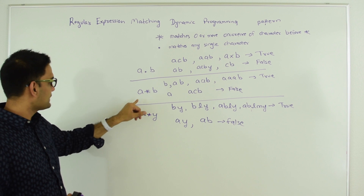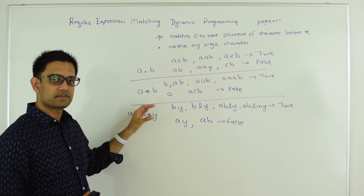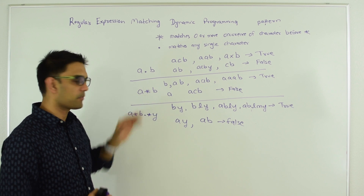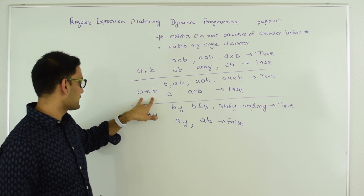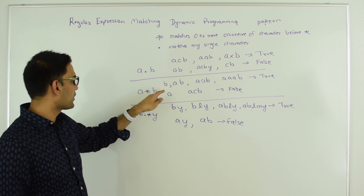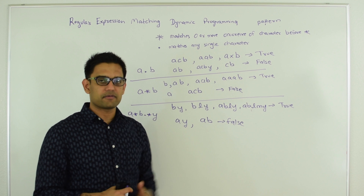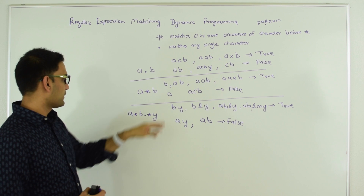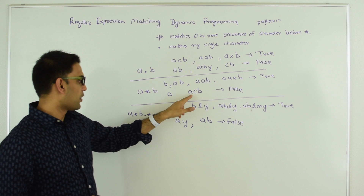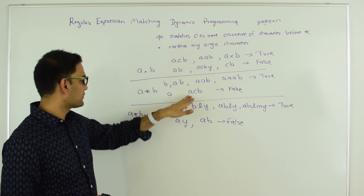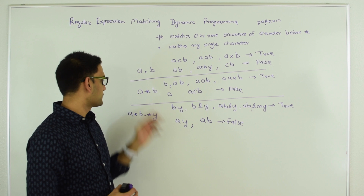Another example: A star B. Here we can have zero or more occurrences of A followed by B. So if my text is B and pattern is A star B, that's a match because we can have zero occurrences of A. Similarly AB and AAB are matches. On the other hand, A is not a match because we need a B at the end, and ACB is not a match because there is no C in this pattern.